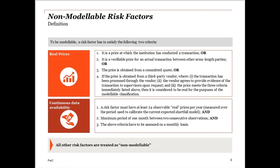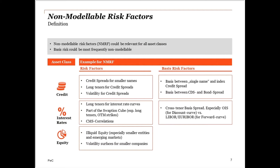The regulator provides two criteria to qualify risk factors as modelable, with all others treated as non-modelable. First, the data should reflect a real price, meaning the institution should have conducted a transaction or have a view on a verifiable price of an actual transaction between arm's-length parties, or obtain a price from committed quotes or third-party vendors. The second criterion is the availability of continuous data — the institution should have at least 24 observable real prices per year, and the maximum period between two consecutive observations should not exceed one month. All other risk factors are considered non-modelable.